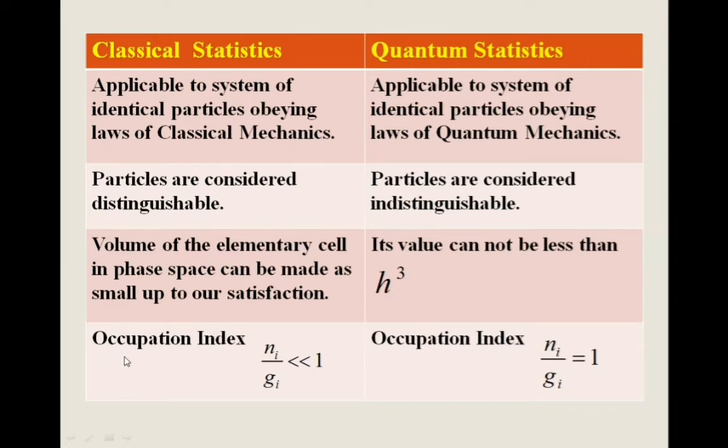In case of classical statistics, occupation index is Ni upon Gi very, very less than 1, meaning the number of states or number of cells is very, very greater than the number of particles.